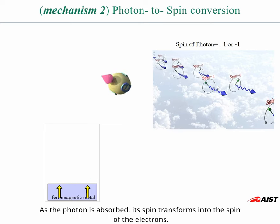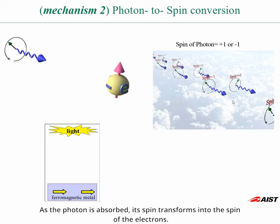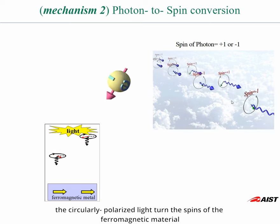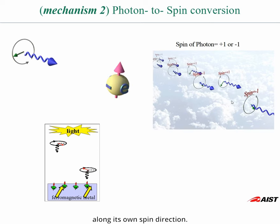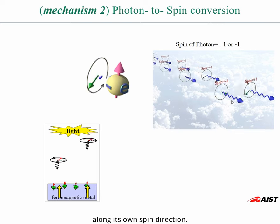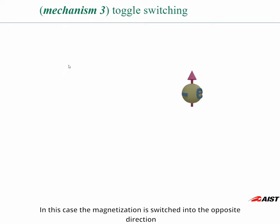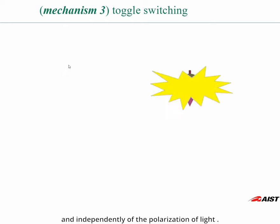As the photon is absorbed, its spin transforms into the spin of electrons. When the number of photons is sufficient, the circular polarized light turns the spin of ferromagnetic material along its own spin direction. The third mechanism is toggle switching. In this case, the magnetization is switched into the opposite direction independently of the initial magnetization direction and independently of the polarization of light.